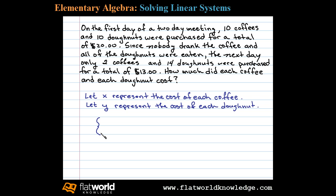Let's look for the keywords. The first keyword I notice is that we purchased 10 coffees and 10 doughnuts for a total of $20. This will allow us to set up our first equation. The total cost of coffee is the cost of each coffee times the number purchased — in this case, 10 times X — plus 10 times Y for the total cost of the doughnuts. Together, it adds up to $20.